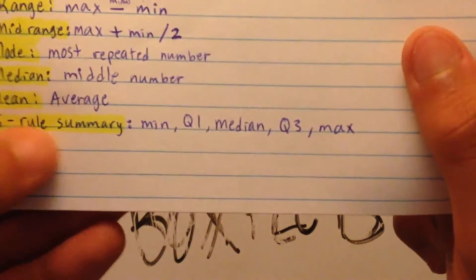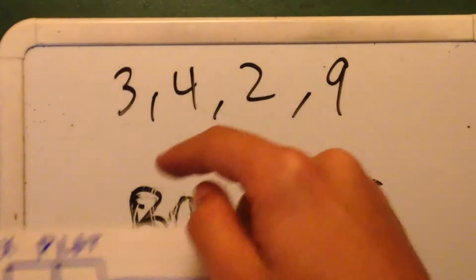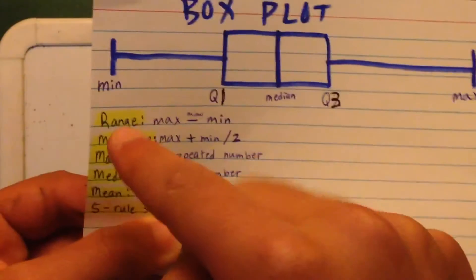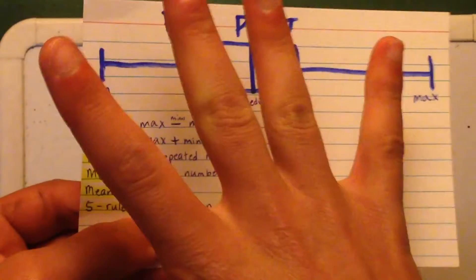And the 5 rule summary is just here. We have the minimum, quartile 1, median, quartile 3, and the maximum. 1, 2, 3, 4, 5. That's what's the 5 rule summary.